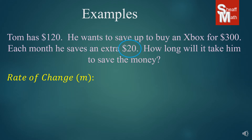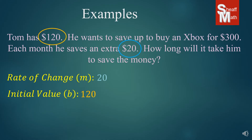$20 is the rate of change — that's how much he's adding to his account each month. We have the initial value, which is what he started with: $120, and that is the y-intercept. So we take our generic slope-intercept form, put our m=20 and our b=120 in, and we have our equation: y equals 20x plus 120.